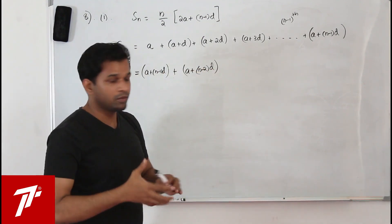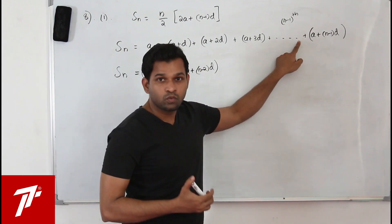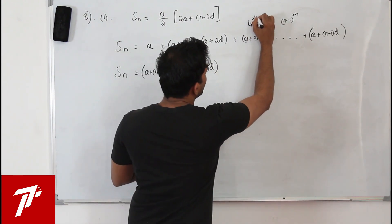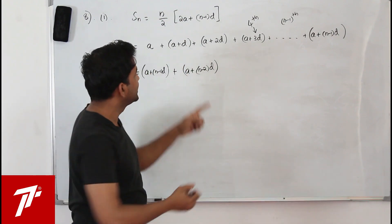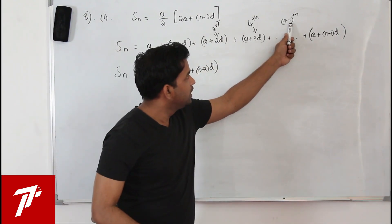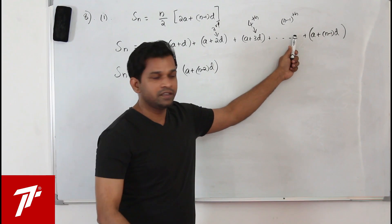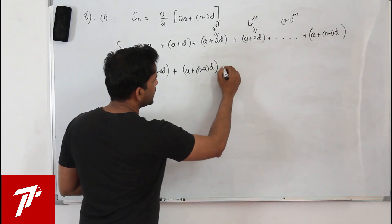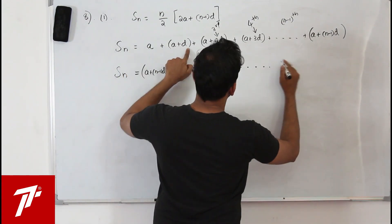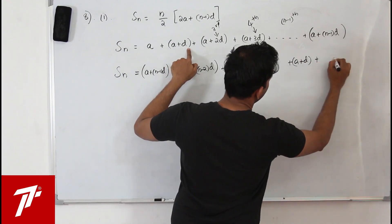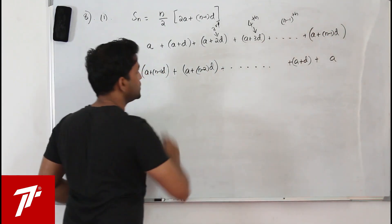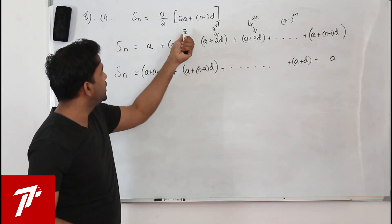To clarify: the fourth term has 3d, the third term has 2d. So the n minus 1th term has n minus 2 into d. The flipped series ends with a plus d and then a as the last term. This is the same series with n terms, just flipped. I am doing this to prove the formula.